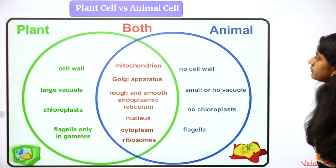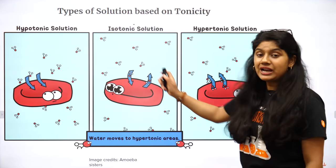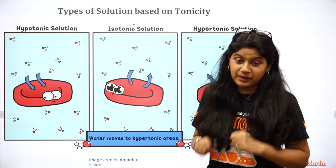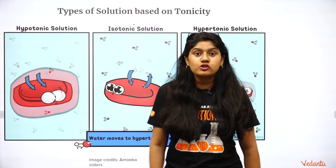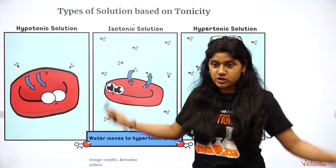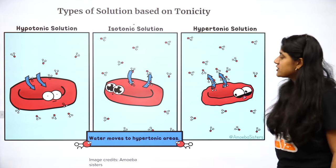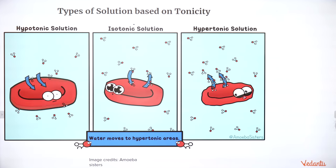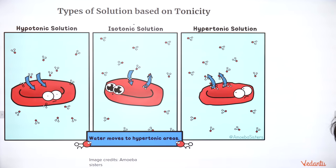In hypotonic solution the cell swells up — it has less water inside and more solute concentration outside, so water rushes in. In isotonic solution everything is fine, the cell is in a happy state with equal transfer happening. In hypertonic solution the cell will shrink.